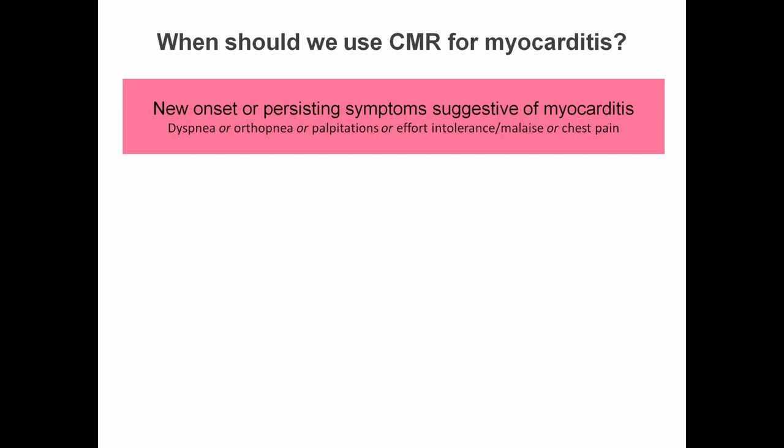So when would it be appropriate to perform a CMR study for suspected myocarditis? The recommendations suggest that it's appropriate when someone presents with new onset or persisting symptoms suggestive of myocarditis. This might include breathlessness or orthopnea, palpitations, effort intolerance, malaise or chest pain.